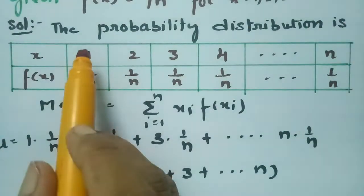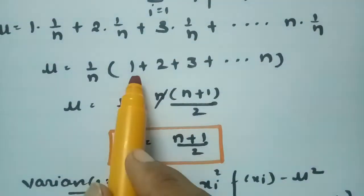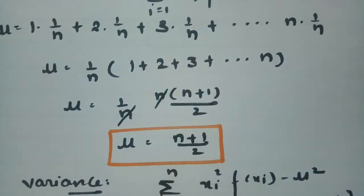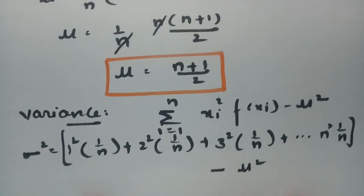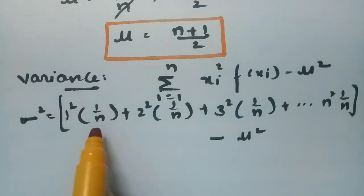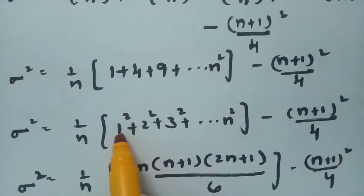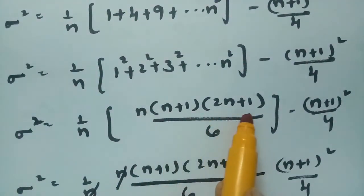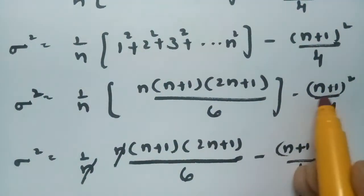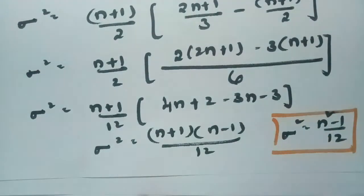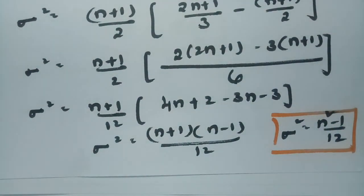To summarize: for the mean, we multiply the x values by 1/n and use the sum of n terms = n(n+1)/2, giving μ = (n+1)/2. For the variance, we use the sum of squares = n(n+1)(2n+1)/6 and μ² = (n+1)²/4, and after simplifying, σ² = (n²−1)/12. Thank you for watching — please like, share with friends, and subscribe to the channel.